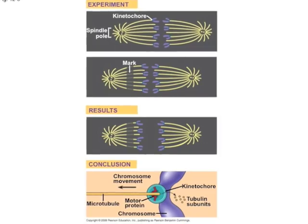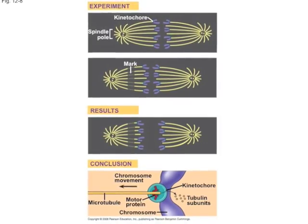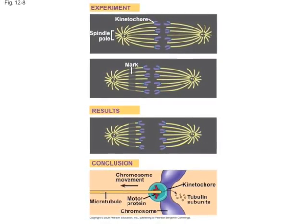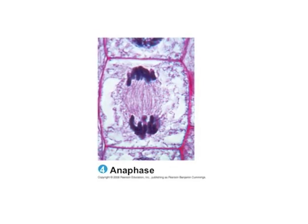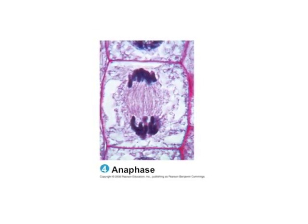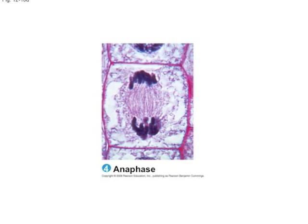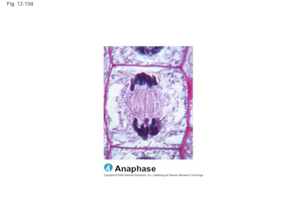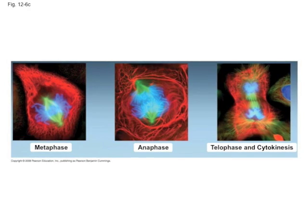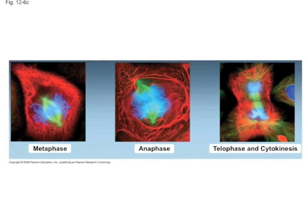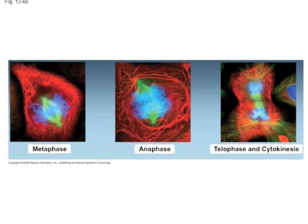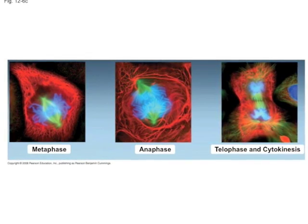In anaphase, the kinetochores pull the sister chromatids apart, leaving them each as their own separate chromosome with their own centromeres. Thus, there will be twice as many chromosomes in anaphase as there were in metaphase.